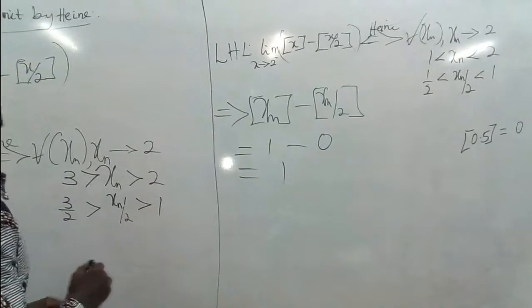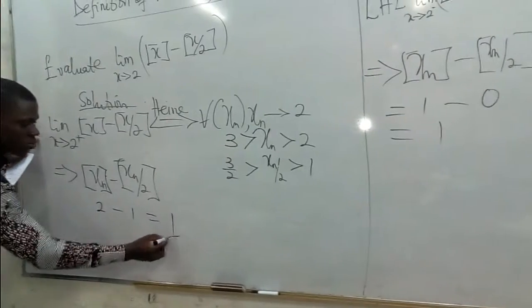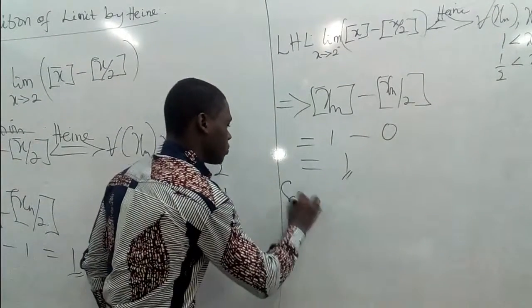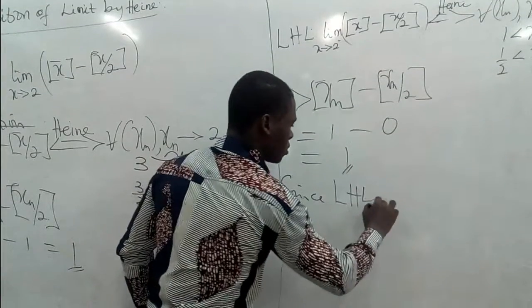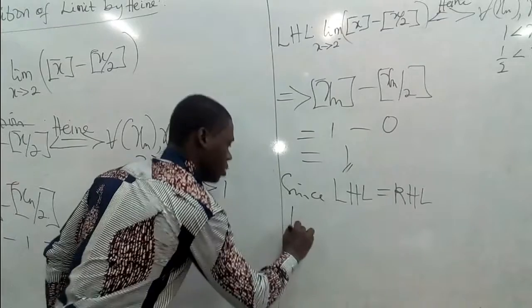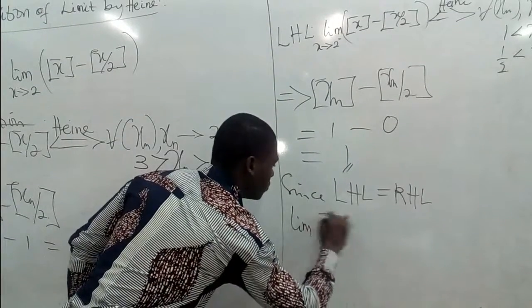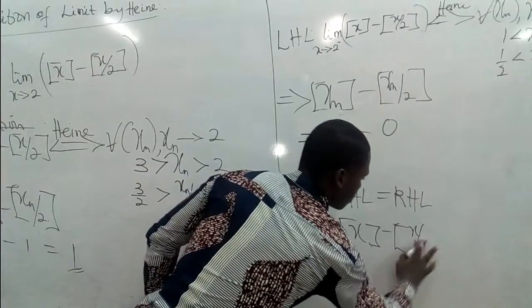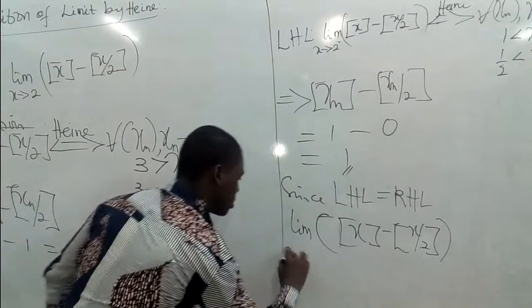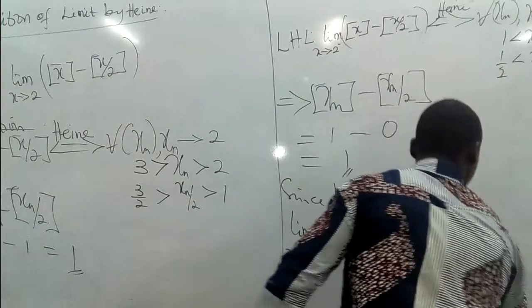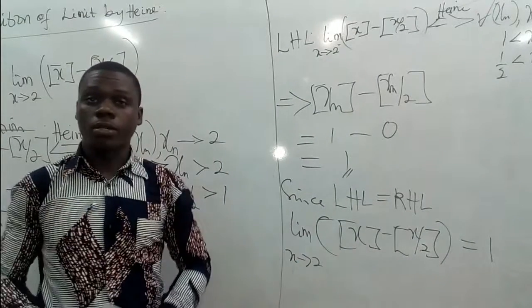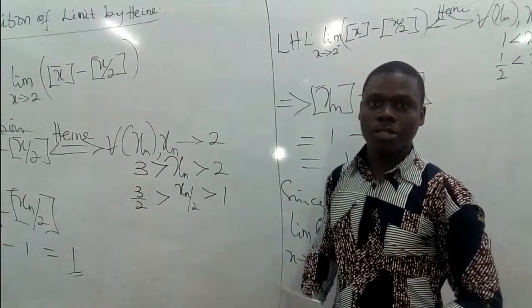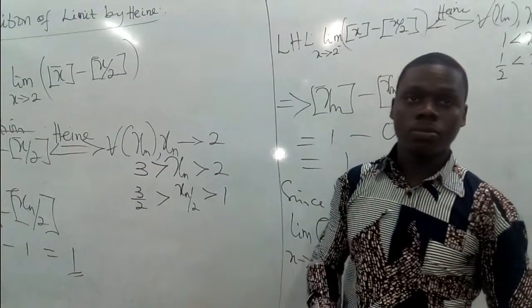So we have shown that the right-hand limit gives us 1, and the left-hand limit also gives us 1. Since the left-hand limit equals the right-hand limit, we conclude that the limit of the function divided by 2 as x approaches 2 is equal to 1. That is our second example. Thanks very much for watching. I will see you again to look at more examples.